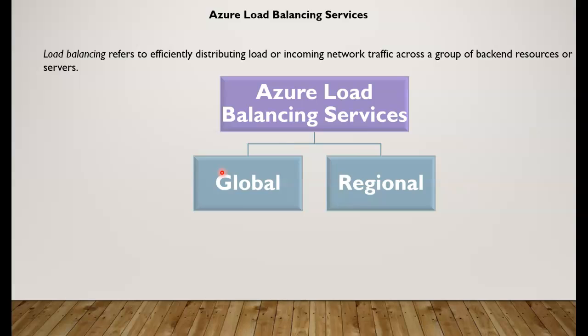These global services also react to changes in service availability and performance to maximize availability and performance. You can think of them as systems that load balance between application stamps and endpoints, and scale out hosts across different regions and geographies.